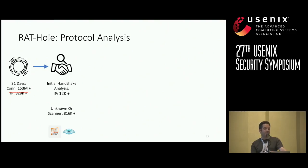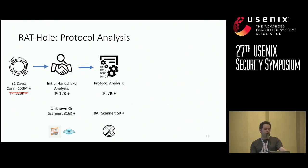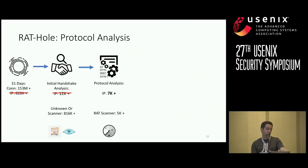Next, we did a deeper protocol analysis for the remaining 12,000 IP addresses. We analyzed protocol execution patterns, how malformed packets are handled, payload structure, and protocol field formatting. We noticed many of these still didn't look like real victims. Our next hypothesis was that there are higher-fidelity scanners that implement the first part of the RAT handshake and possibly more of the RAT protocol. In order to remove these, we implemented the complete RAT protocol handshake, and sure enough, we found about 5,000 addresses that originated from these high-fidelity scanners.